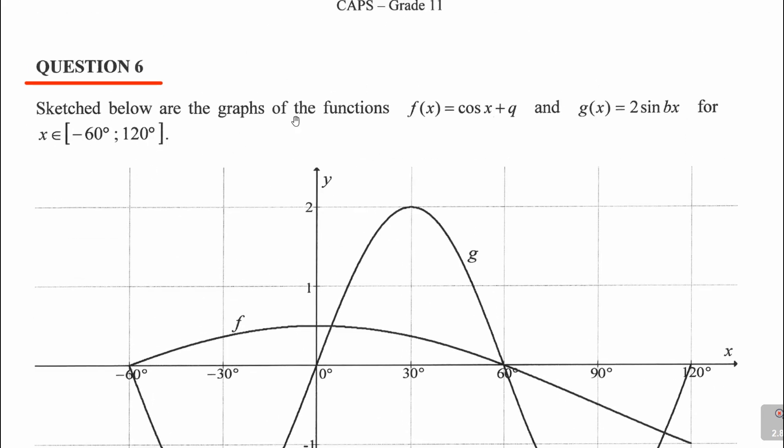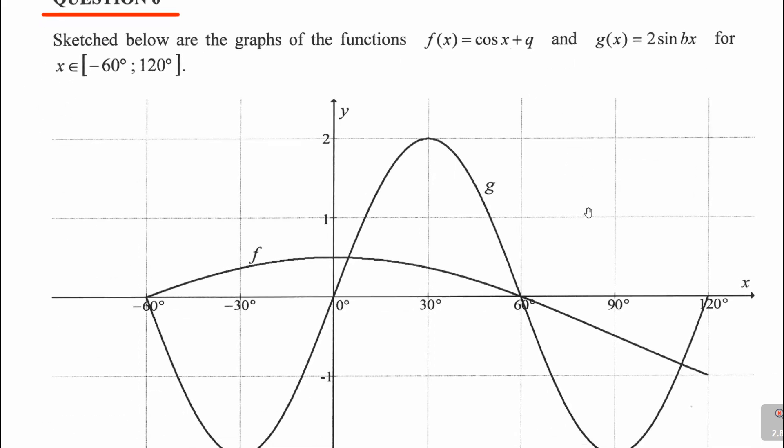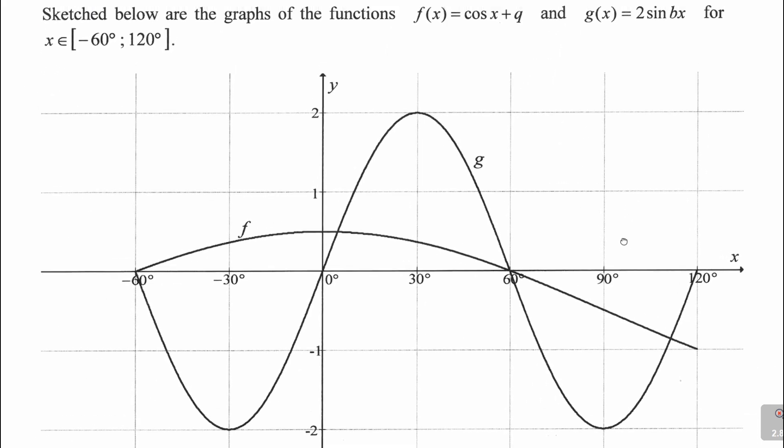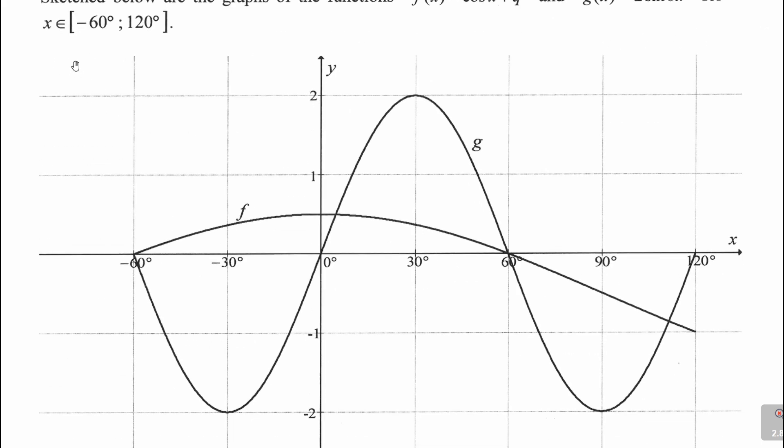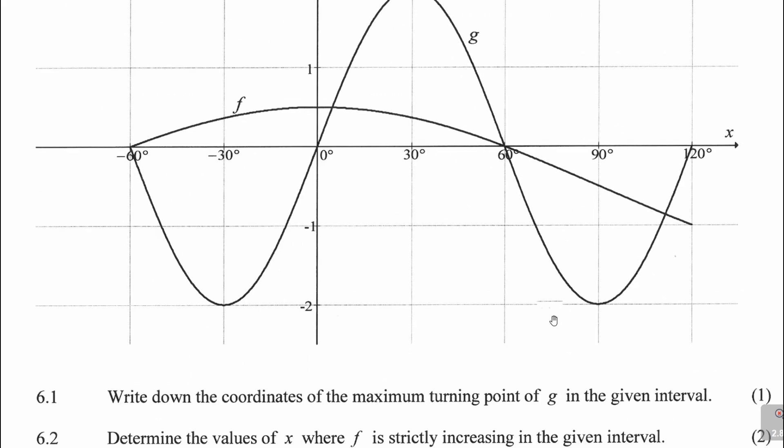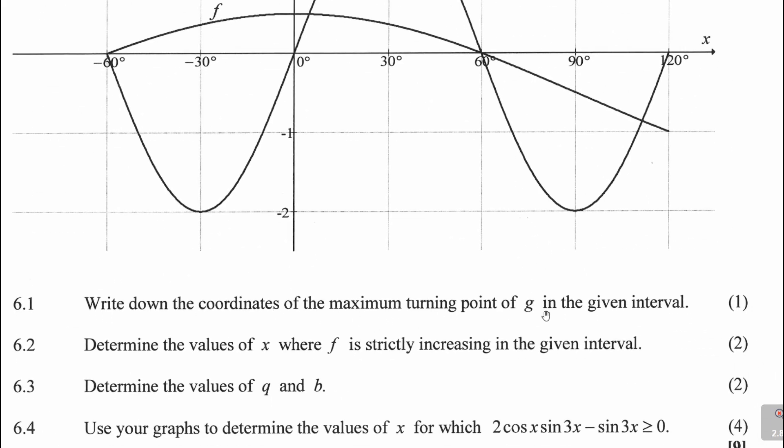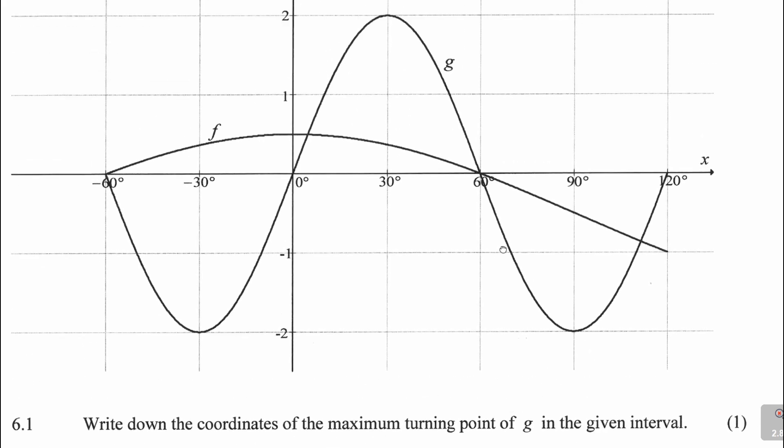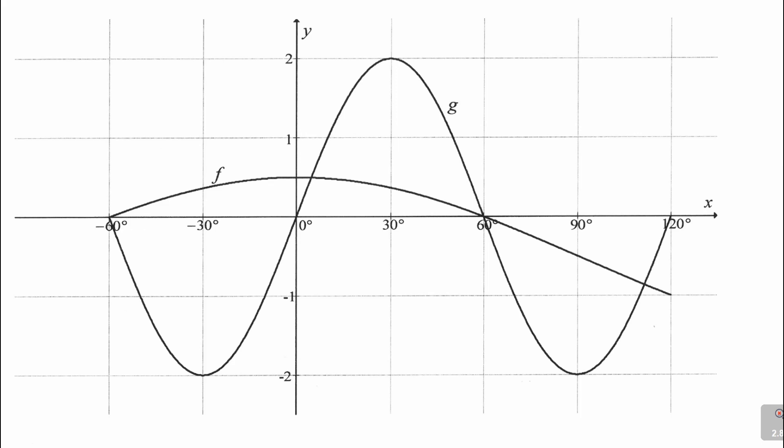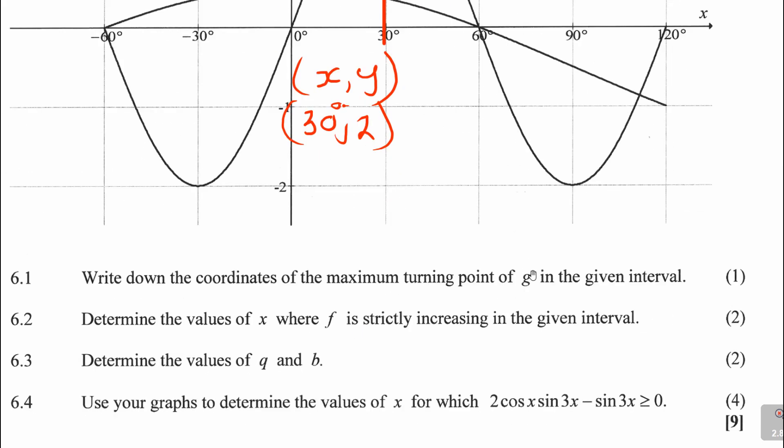Let's come to the lesson. Question 6. Sketched below are the graphs of f(x) = cos x + q and g(x) = 2sin bx for x ∈ [-60°, 120°]. Question 6.1: Write down the coordinates of the maximum turning point of g in the interval. Where does g turn maximum? It's there. The coordinates are x is 30 degrees and y is 2. That's (30°, 2). One mark.